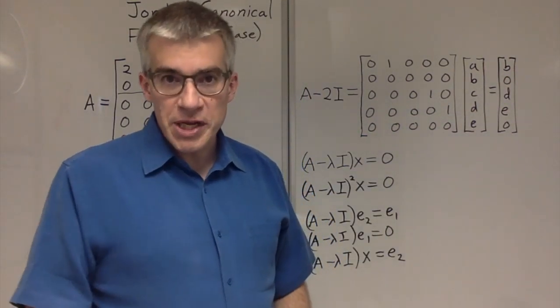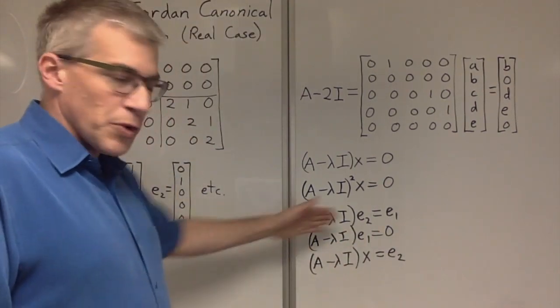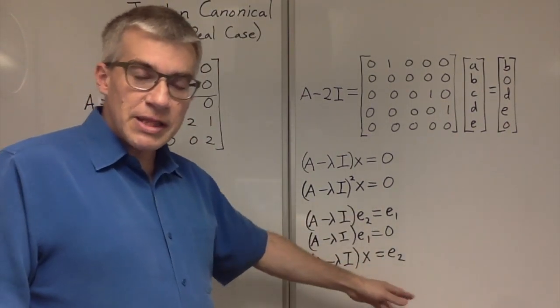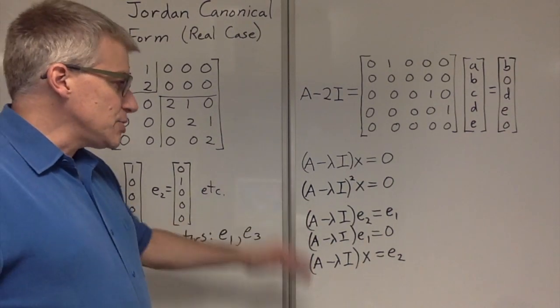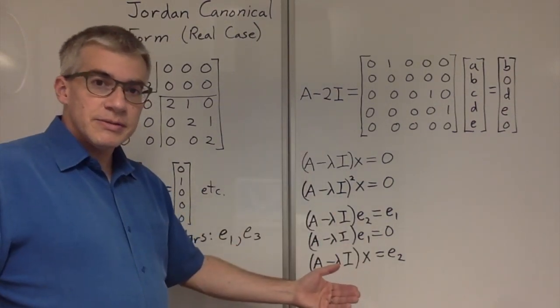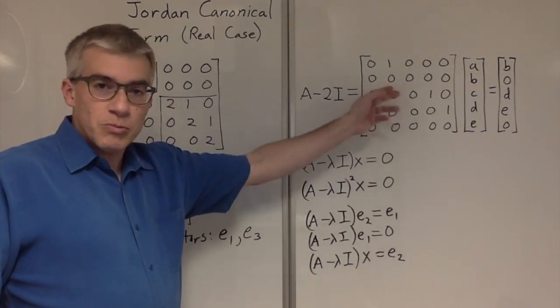Therefore, this chain has terminated. There is no further generalized eigenvector in that chain. So E1 is the eigenvector. E2 maps to E1, and then E1 maps to 0 with this matrix.